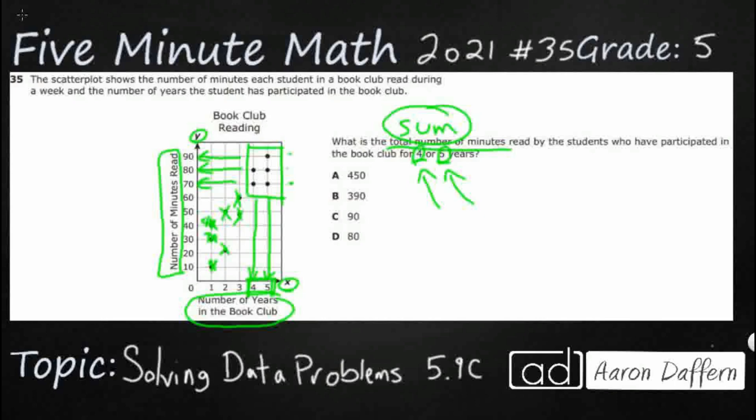So let's start with our 4 years. So let me just pull this off here. Years. I'm just going to say minutes. So I've got 2 kids that have done 4 years, because I see 2 dots on this right here. This one and this one. The first one looks like read 70 minutes. That's that bottom one. So I'm going to put a 70 right there.